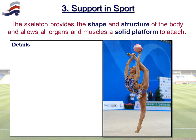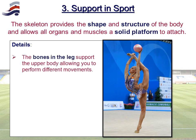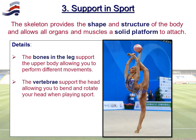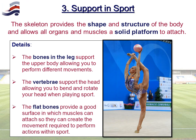Support: the skeleton gives us our shape. Although muscles and skin can provide additional shape, the primary structure of our body comes from the skeleton, and it's the solid platform where organs and muscles are attached. Bones in the legs support the upper body; the vertebrae support the head so it can bend forwards, backwards, and rotate left and right. Flat bones within the body allow muscles to attach to them, and muscles are integral for anything we do in sport.